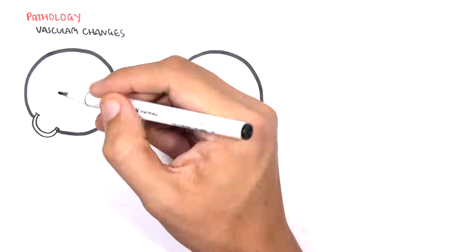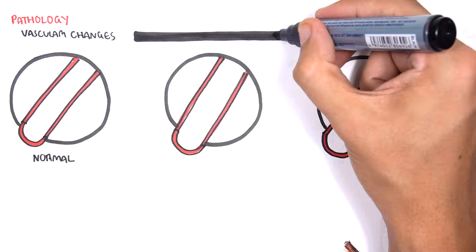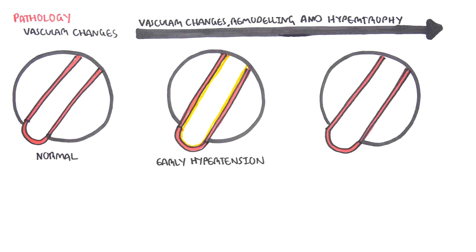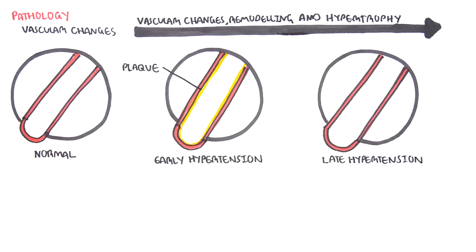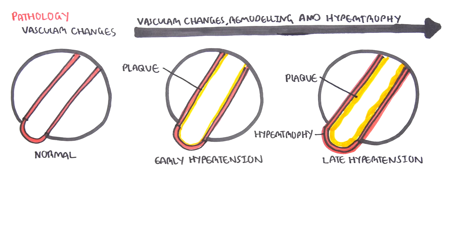The pathological vascular changes that occur in hypertension occur slowly. Normal vessels have good blood flow. However, in hypertension, as it progresses, there are vascular changes, remodeling, and hypertrophy. In the early stages, you begin to have plaque buildup and thickening of the vessel wall. In the late stage, you get even more plaque buildup due to the dysfunction of the endothelial vascular wall, and you also get hypertrophy. All these changes result in narrowing of the lumen and buildup in vascular pressure, resulting in or aggravating hypertension.